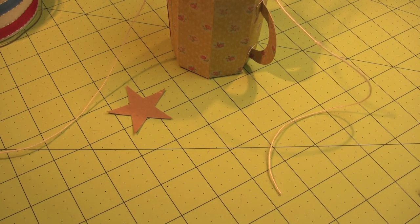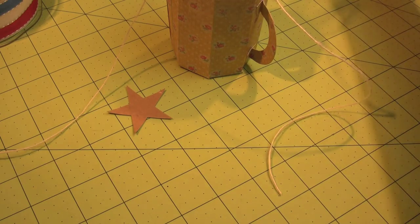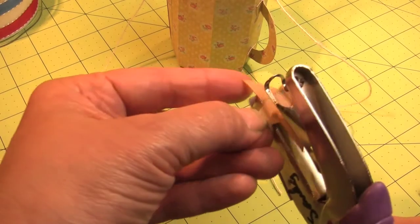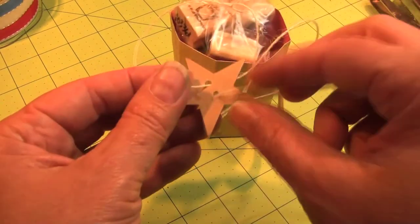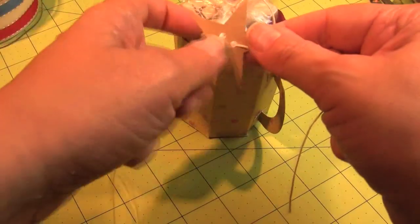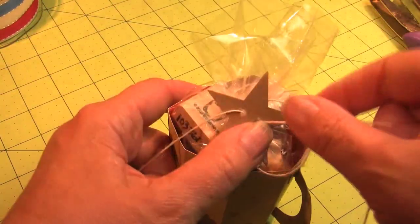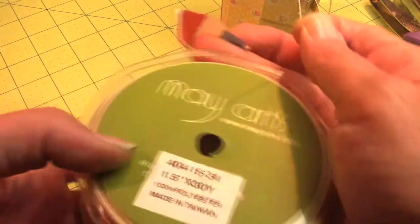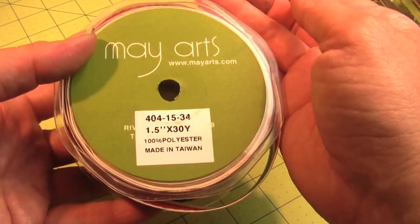And I'm going to punch out some stars with my Fiskars Squeeze Punch. This is going to be the thing that's going to hold the ribbon onto the top of the little package that I've got going. And I'm doing a star, you can do any shape you want, but since it's a patriotic holiday I thought I would do a little bit of patriotica here. And I've just threaded each end of the string and set that aside.